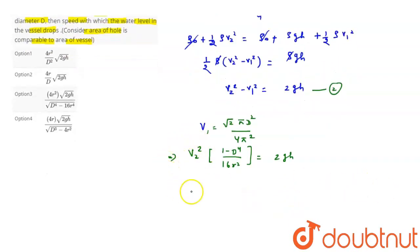After then V2 square, the value V2 equals this is 2 R square, R square root 2 G H upon this is 16 R4 minus D4 to the power 1 by 2. So this is 16 R square, sorry 4 R square. This is root 2 G H upon this is D4 minus 16 R4. So this is the answer. So option number 3 is correct.